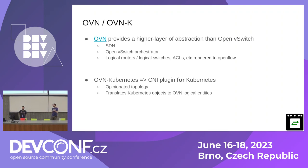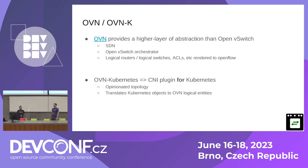OVN Kubernetes is a CNI plugin that provides an opinionated topology and essentially translates Kubernetes objects to OVN logical entities. For example, if you provision a network policy on your cluster, OVN Kubernetes will translate that into a set of ACLs, and those ACLs will be translated to OpenFlow installed on the nodes. Same thing with services. That's its task: translate from Kubernetes object to OVN logical entity.